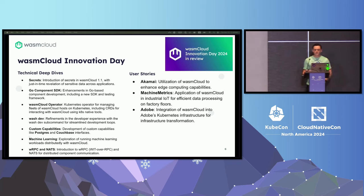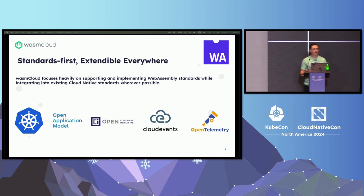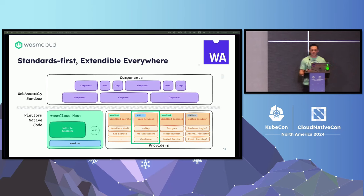Looking at what we've done — why have we seen wasmCloud grow so much in the last six months? Standards first, extensible at every turn. Using existing standards, deploying on existing platforms like Kubernetes without being dependent upon it, being completely OTEL observable, and using common standards like OCI to distribute Wasm is part of why this slots so well into the cloud-native ecosystem. We've been able to add first-class secret support as a wasmCloud primitive, very similar to the external secret store SIG in the CNCF. We've been able to add custom capability implementations for standard interfaces like key-value, and our own custom implementations for things like Postgres, your own hosted service, or internal connectors.